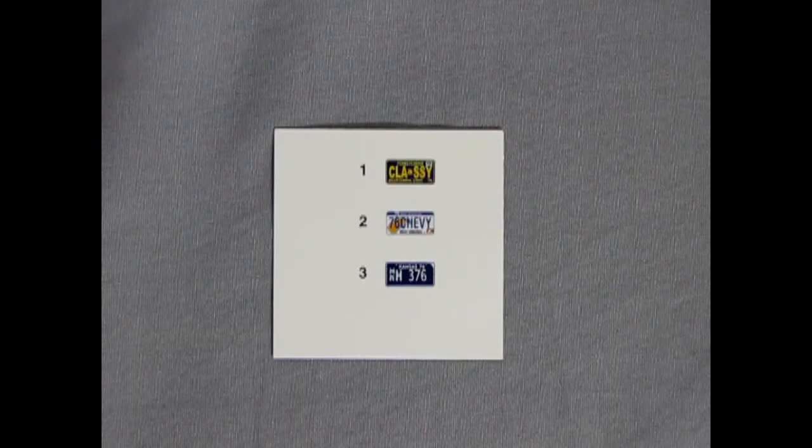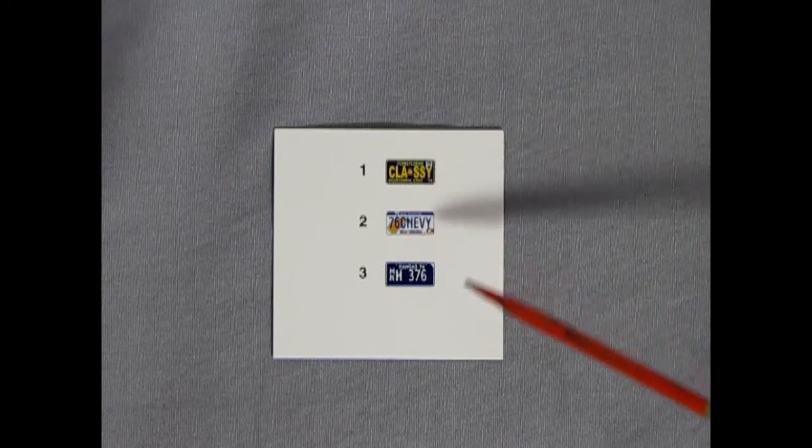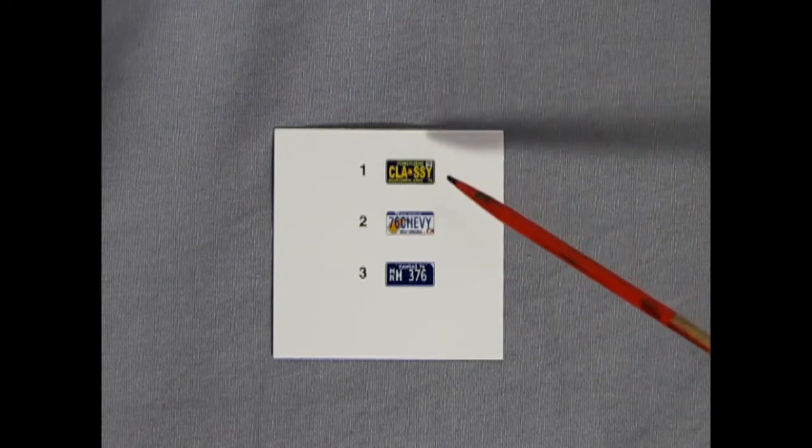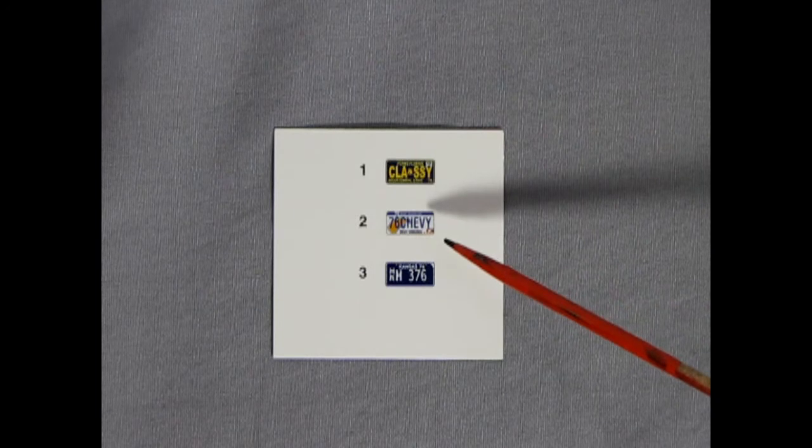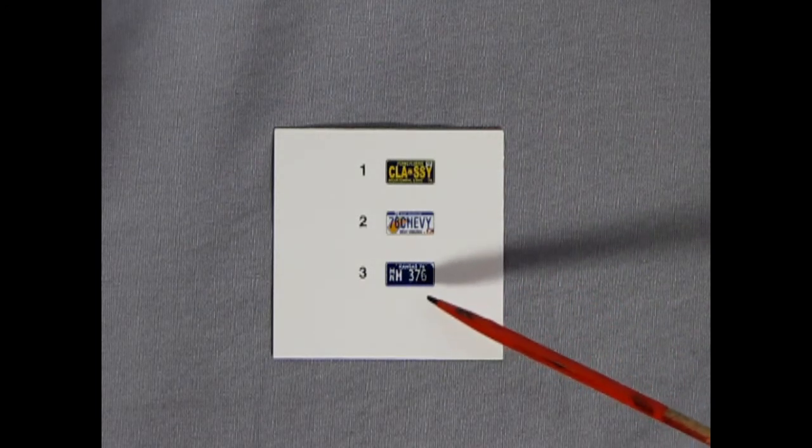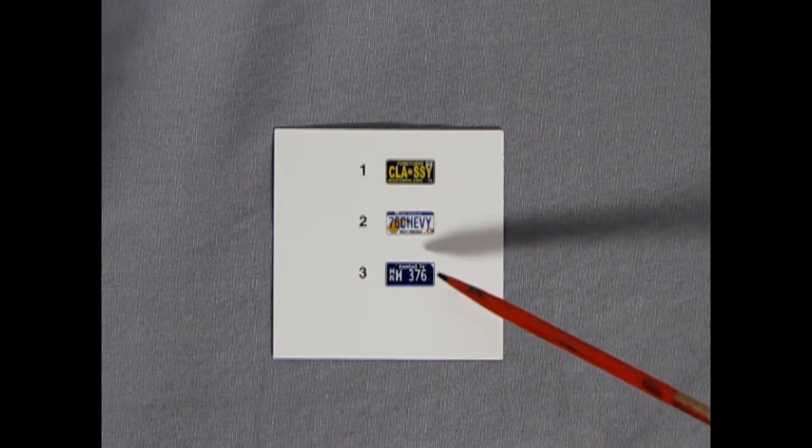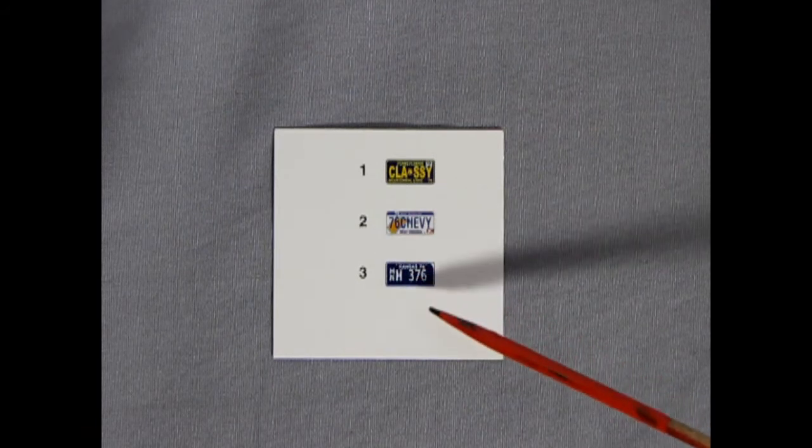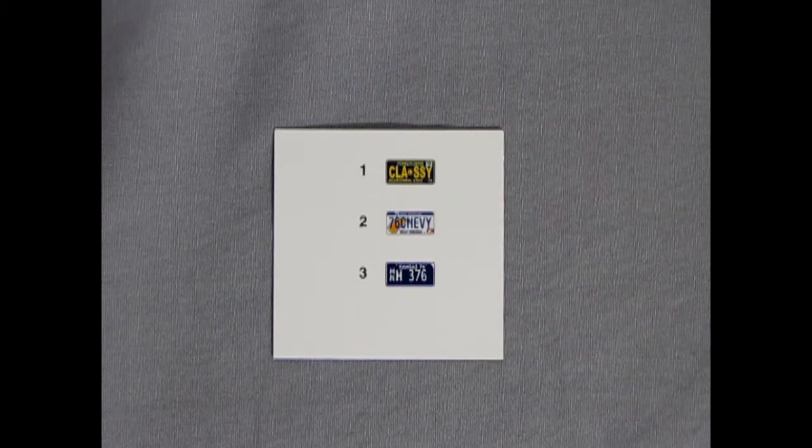Last but not least we have our decal sheet which just consists of three license plate decals. Pennsylvania Classy, West Virginia 76 Chevy and a Kansas H376 license plate which I do believe might be a diplomat style plate but that's all we have.